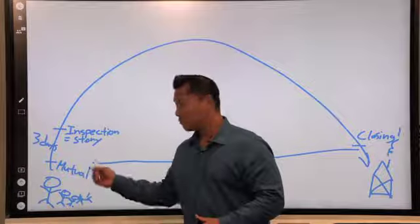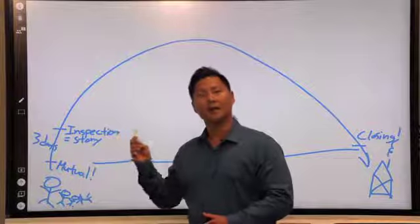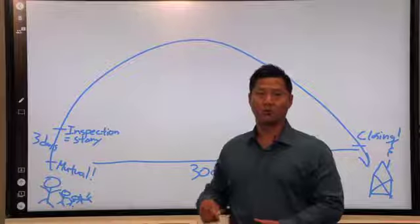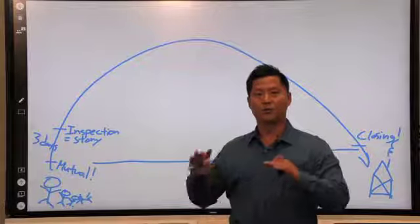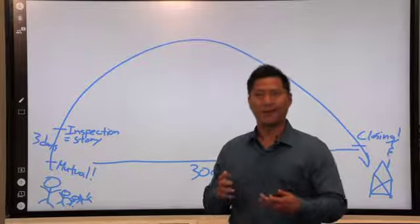And before we get to mutual acceptance, we have already known that, hey, unless we find something major in the home, we're going to move forward with it. Like the Seattle home, we found wavy floors, we found a stuffy interior and a layout that just didn't make sense.